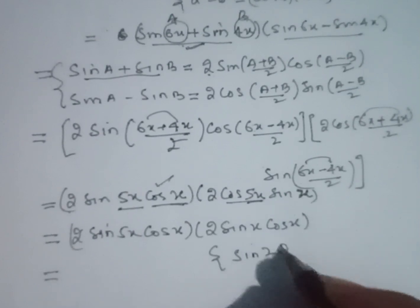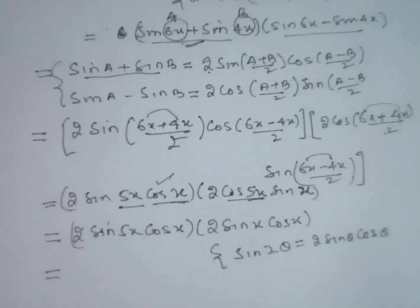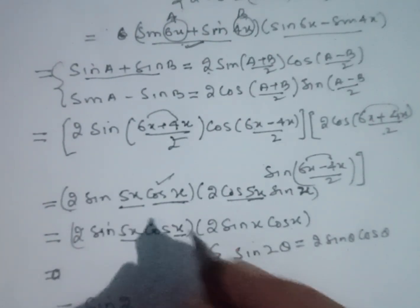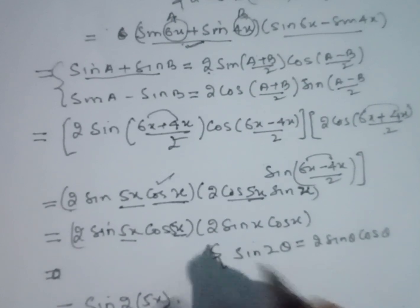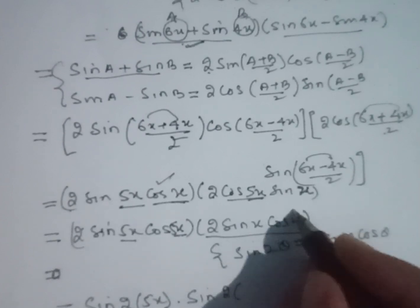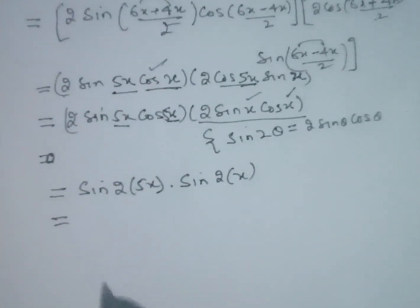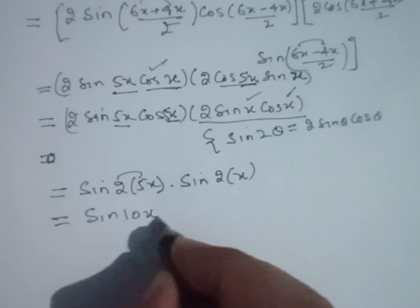identity: 2 sin θ cos θ equals sin 2θ. According to this identity, the further step should be sin(2 × 5x) which is sin 10x, and sin(2 × x) which is sin 2x. So sine 5 times 2 is 10x, here